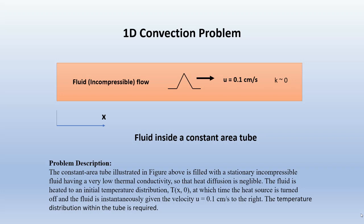Our 1D convection problem is given here. We have a constant area tube filled with a stationary incompressible fluid that has a very low thermal conductivity so that we can neglect heat diffusion. The fluid is heated to an initial temperature distribution T(x, 0). The heat source is turned off at time equals 0 and the fluid is instantaneously given a velocity u equals 0.1 centimeters per second to the right. Our interest is to find the temperature distribution in the tube with time.